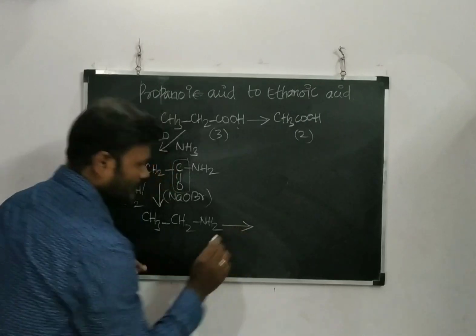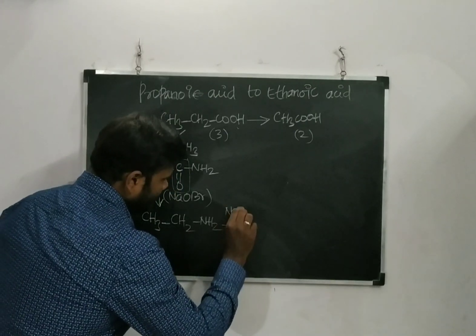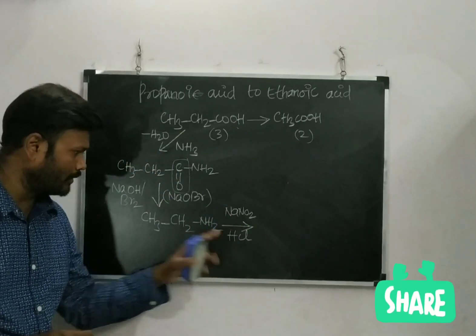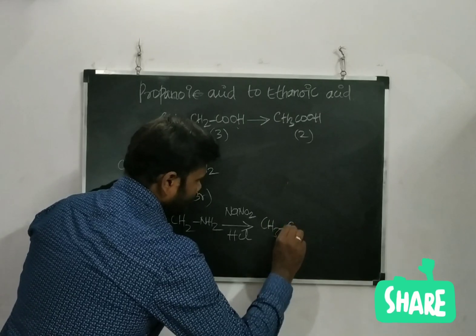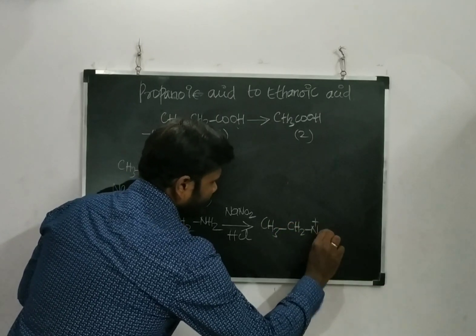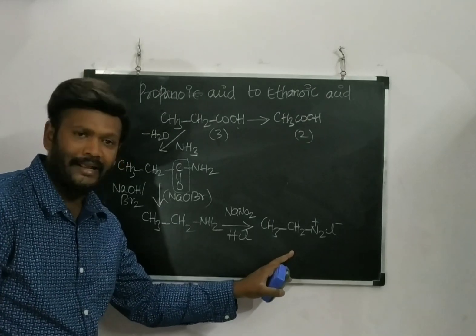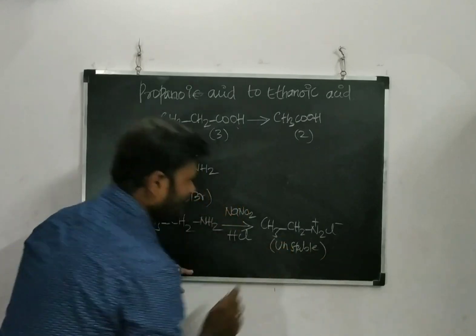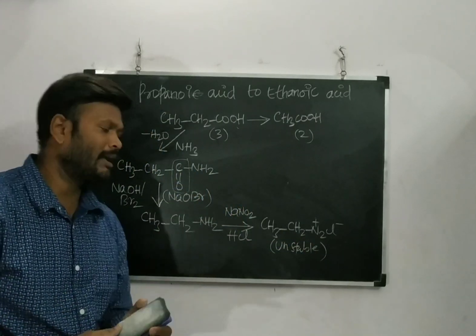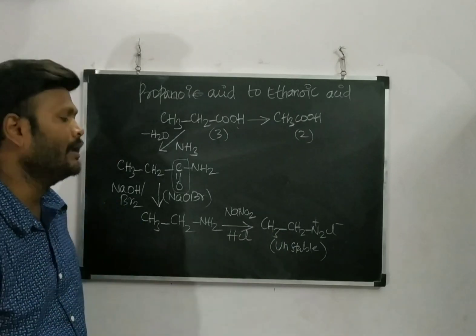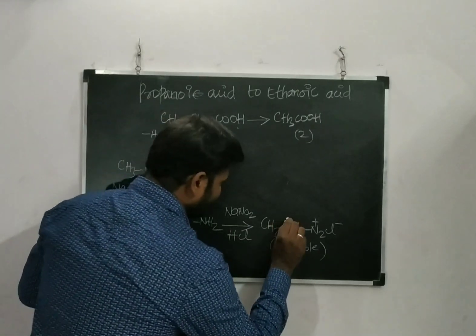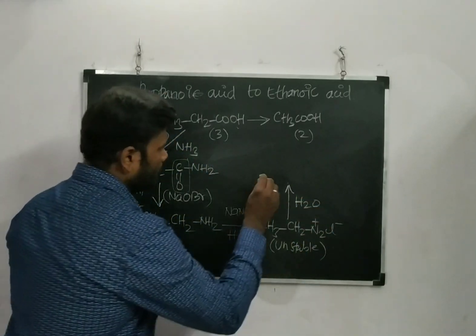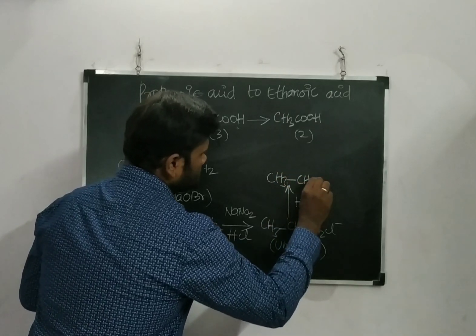Once I got the amine, my work is very simple. I am going to add NaNO2 as well as HCl. If I add NaNO2 and HCl, I will be getting a diazonium product — CH3, CH2, OH — with N2 being released.